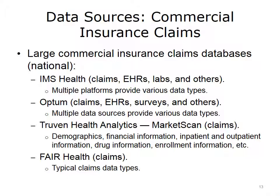A number of commercial insurance claims data warehouses are also available for population health analysis. These large claim databases often have a national scope. Some of these large commercial databases include non-claims data sources as well. A sample list of data sources often used by population health analysts includes IMS Health, which contains a mix of claims, EHRs, labs, and other data sources; Optum, which contains claims, EHRs, surveys, and other data sources; Truven Health Analytics MarketScan, which mainly contains claims; and Fair Health, which also contains claims.